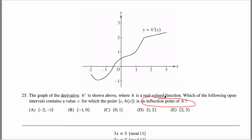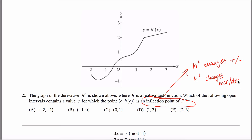An inflection point of h means h double prime changes sign — changes from positive to negative or negative to positive. But that's equivalent to saying h prime changes from increasing to decreasing or decreasing to increasing. Why are those the same? Because h double prime is the derivative of h prime. So if the derivative of h prime changes sign, then h prime is changing between increasing and decreasing. So really, all I have to do is look at this picture and figure out when it switches from increasing to decreasing or decreasing to increasing.